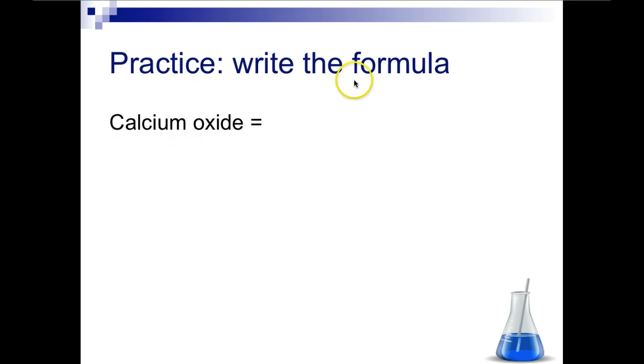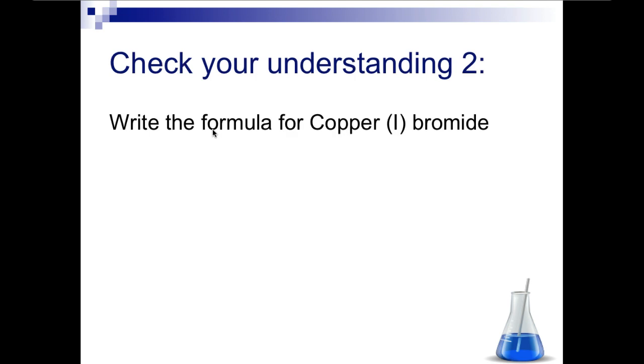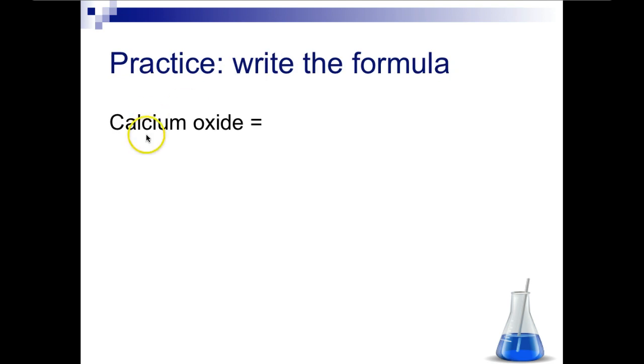Let's practice writing the formula. We have calcium oxide. Pause the video and unpause when you're finished. What did you come up with? Calcium is plus 2, oxide is minus 2, so you should have come up with the formula CaO. I will go over this in more detail in class tomorrow.